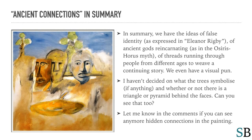In summary, we have the ideas of a false identity as expressed in Eleanor Rigby, of ancient gods reincarnating as in the Osiris-Horus myth, and of threads running through people from different ages to weave a continuing story. We even have a visual pun. I haven't decided on what the trees symbolise, if anything, and whether or not there is a triangle or pyramid behind the faces — I wonder if you can see that too. Let me know in the comments if you can see any more hidden connections in the painting.